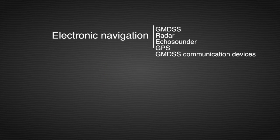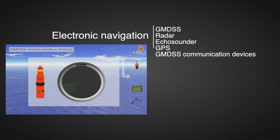Electronic navigation. The transmitted signals from the SART are displayed on an X-band radar screen, providing a visual indication of the distress position.